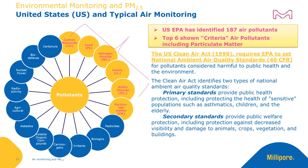The EPA has identified 187 air pollutants as well as six criteria air pollutants, which include particulate matter. These pollutants are governed by two Clean Air Act standards. Primary standards address public health protection including protecting the health of sensitive populations such as asthmatics, children, and the elderly. Secondary standards provide public welfare and environmental protections including protection for animals, crops, vegetation, and buildings.